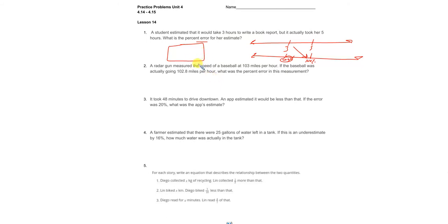Let's look at number two. Radar gun measured the speed of a baseball at 103 miles per hour. If the baseball was actually going this fast, what was the percent error in the measurement? Alright, so let's set our double number line up.